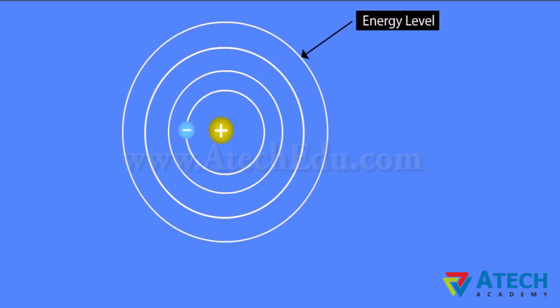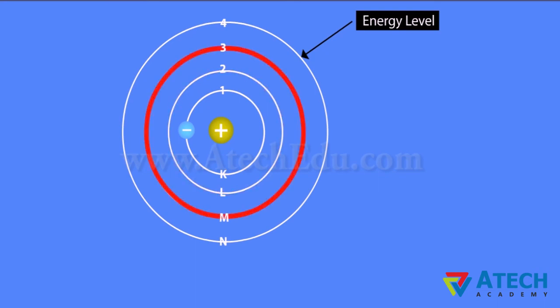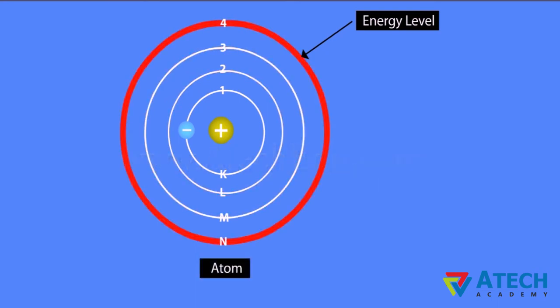Orbits or shells are called energy levels. Their orbits are represented by the letters K, L, M, N or the numbers 1, 2, 3, and 4 and so on, depending on the number of shells in an atom.